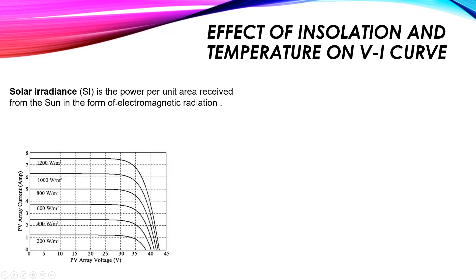Now if we increase the solar irradiance — the power per unit area from the sun — for example to 400 watts per meter squared, you will find that the current increases and the voltage also increases. At 600 watts per meter squared, the current increased and the voltage increased further.